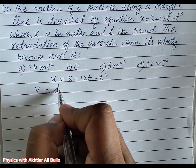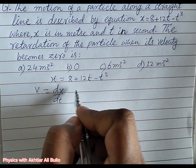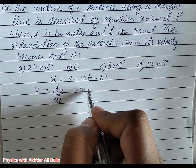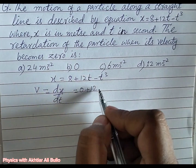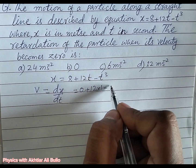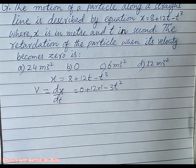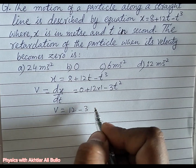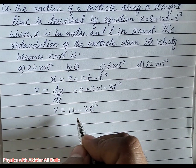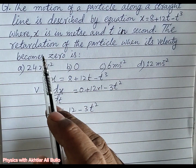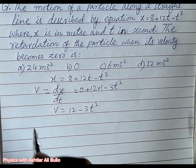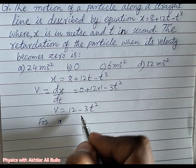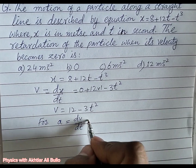Given x = 8 + 12t - t³, velocity v is equal to dx/dt. So v is obtained as 12 - 3t². We have to find the retardation of the particle when its velocity becomes zero. So first, acceleration a is equal to dv/dt.